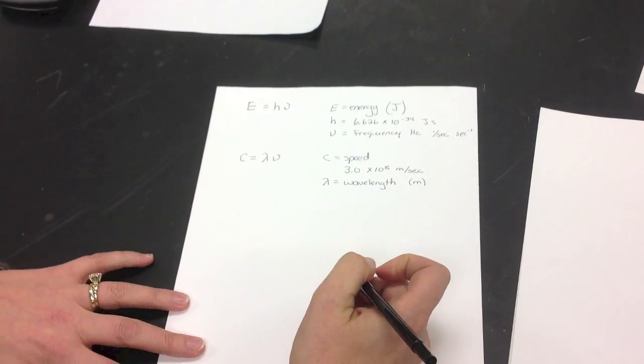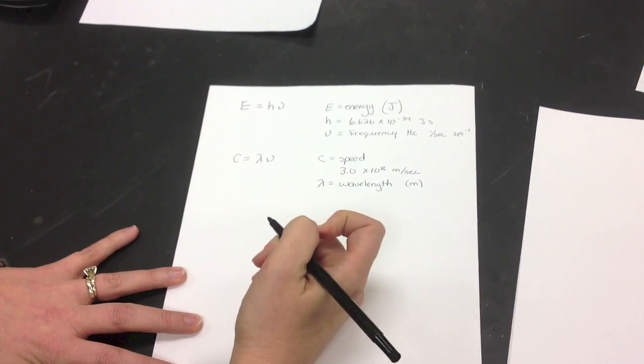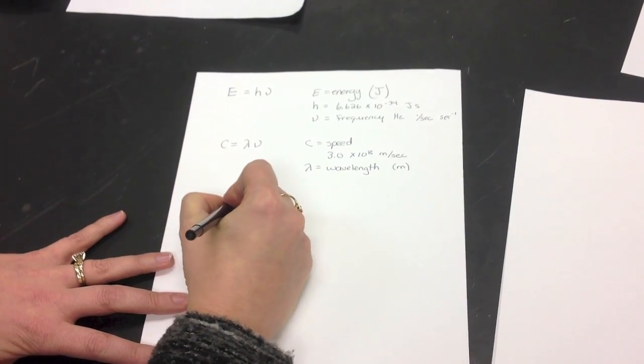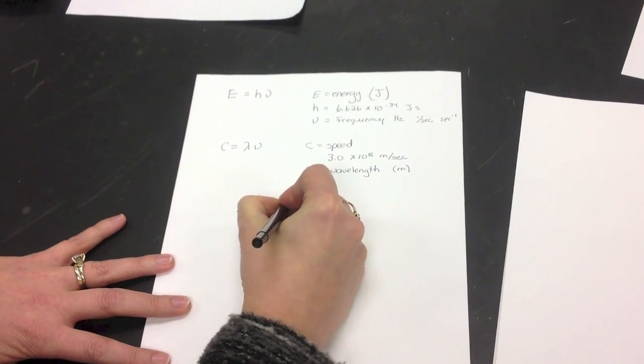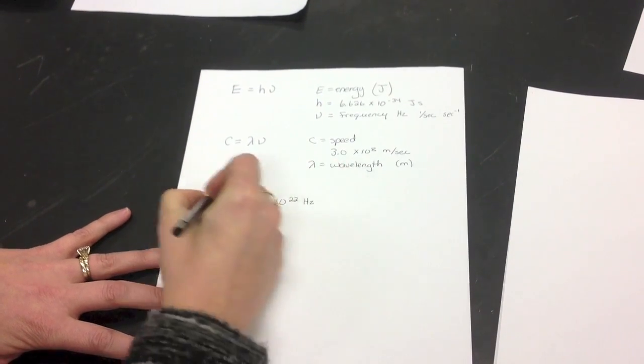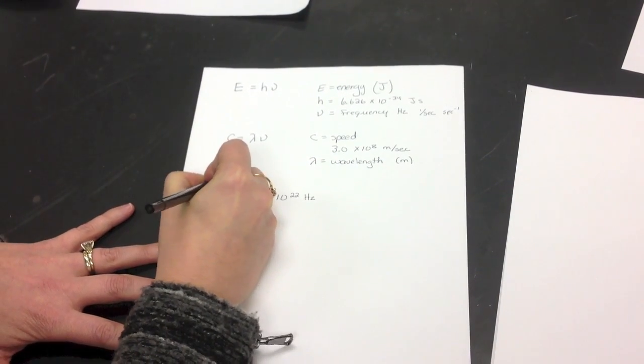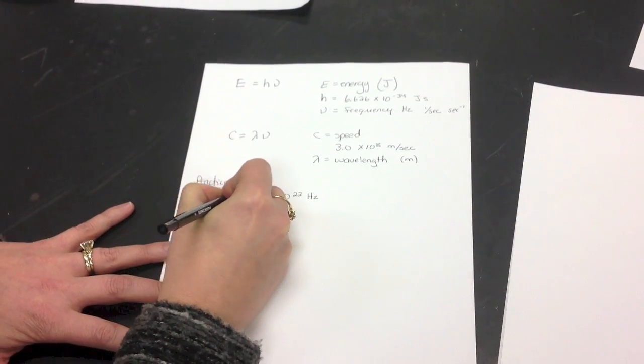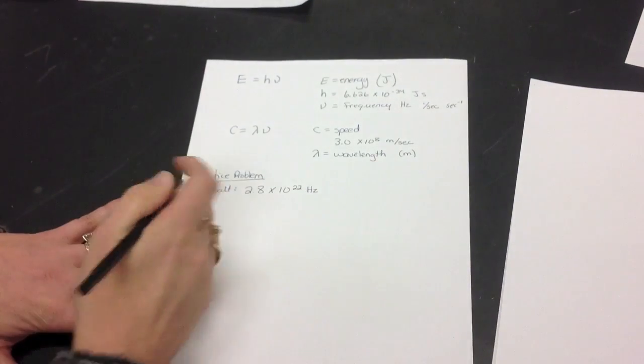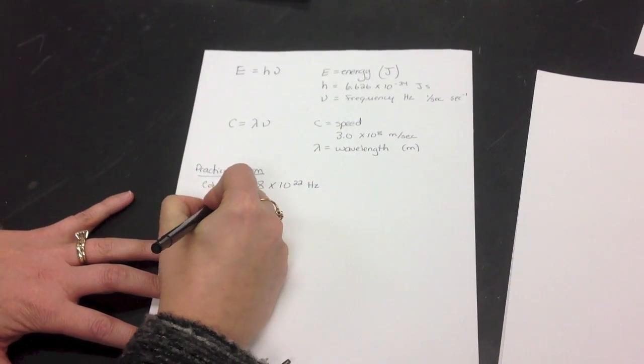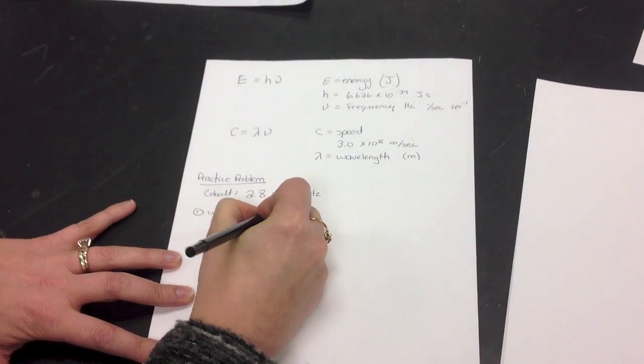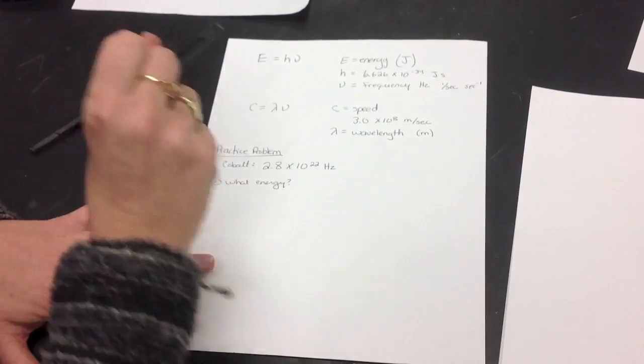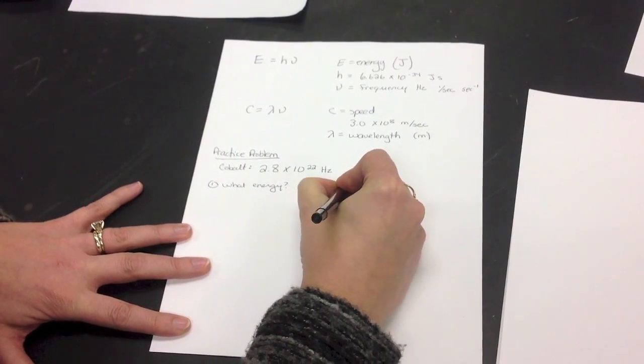So let's start off with a practice problem. So if I have radioactive cobalt, radioactive cobalt gives off energy with a frequency of 2.8 times 10 to the 22nd hertz. So this is going to be a practice problem. So I've got cobalt with a frequency of this. So my first question is going to be, what is the energy? So I look at these two equations, and I see that this is the equation that has energy in it. So I say E equals H nu.